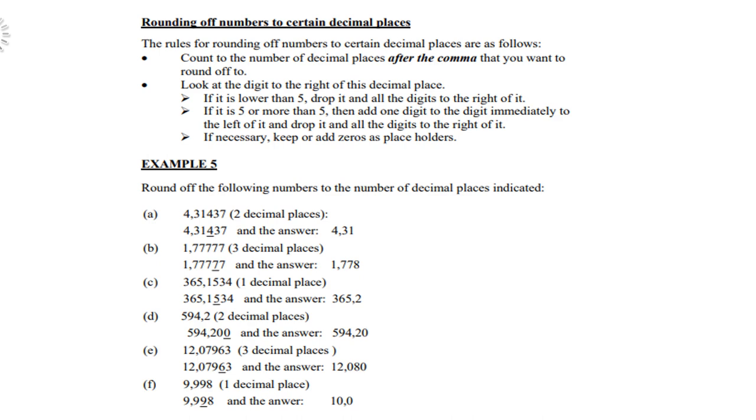E, 12.07963, three decimal places. Go to the fourth decimal which is a 6. So therefore you round up. So that 6 makes the 9 a 10. And the 10 makes the 7 an 8. So therefore 12.080.